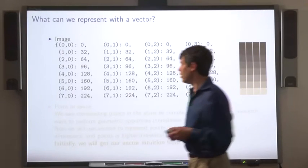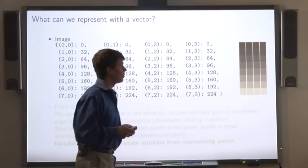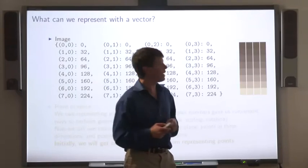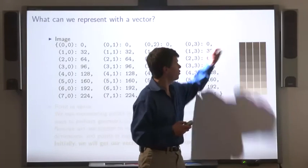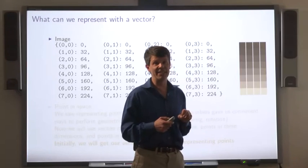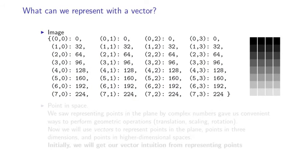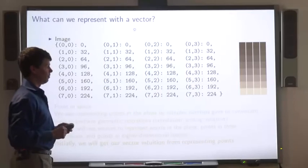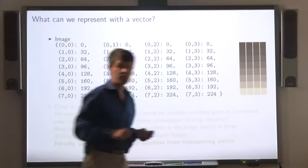Here's a way we can use it to represent an image. An image, you ordinarily think of an image as a grid of pixels and each pixel is represented by an intensity. Well, you can think of this as a mapping from the pixel coordinates to the real numbers. So this image is represented by this function, which we can interpret as a vector.